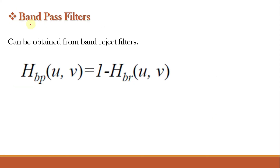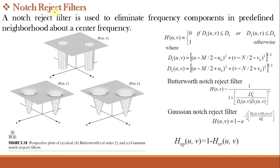Just as high pass and low pass filters are complements of each other, band pass filters perform the opposite operation of band reject filters. The band pass filter can be obtained from the band reject filter itself: its transfer function is given by 1 minus the transfer function of the band reject filter.